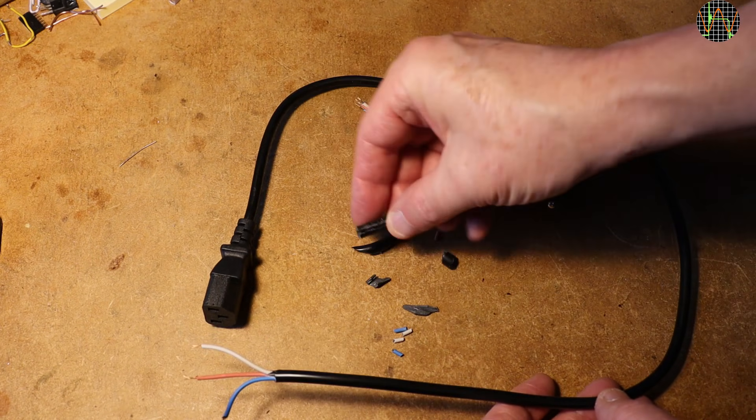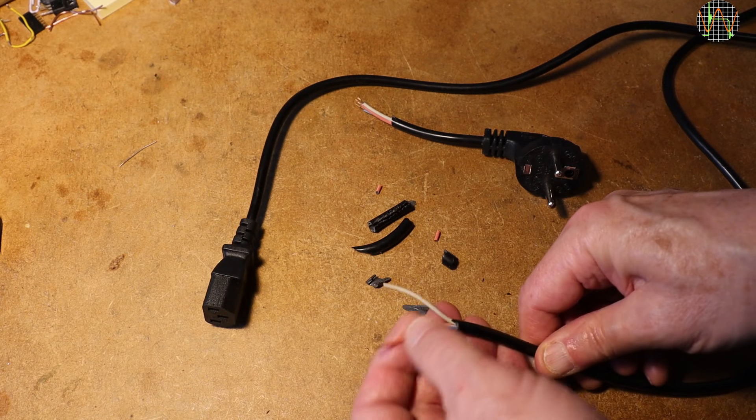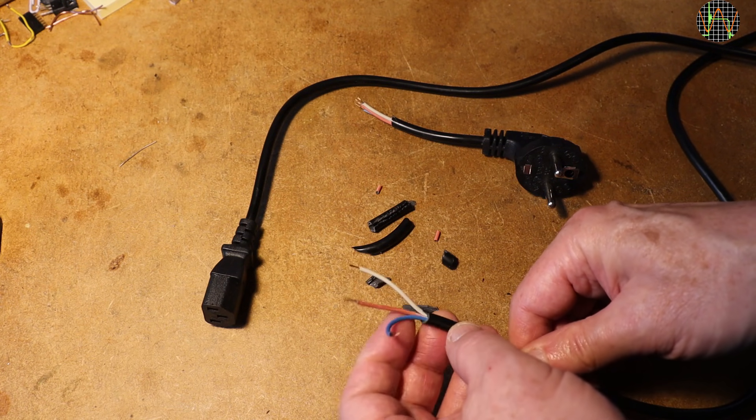But then I needed a short mains lead with a C13 connector and decided to use this cable and put a UK plug on it. This is when I noticed very thin wires and crumbly insulation.